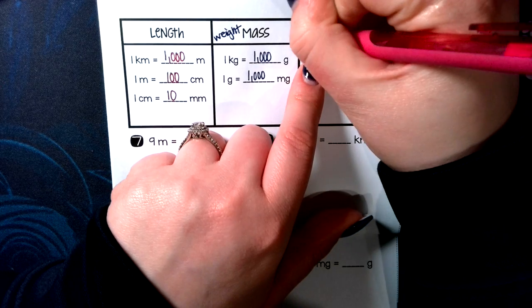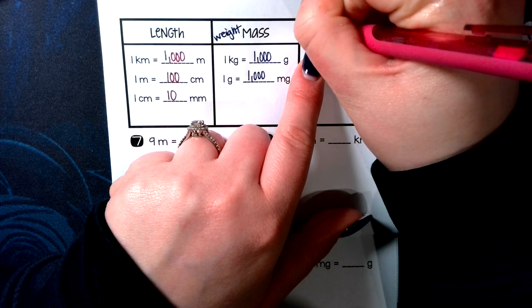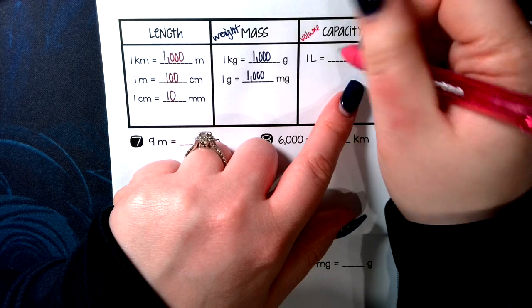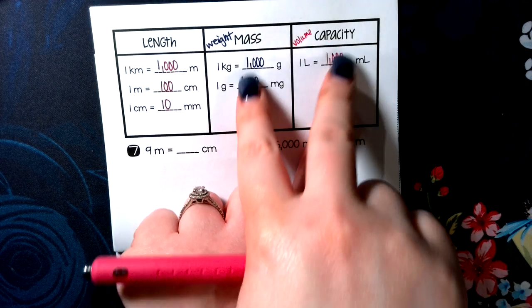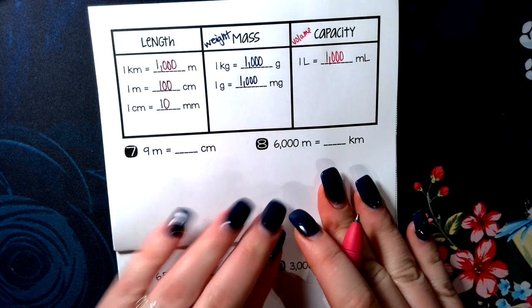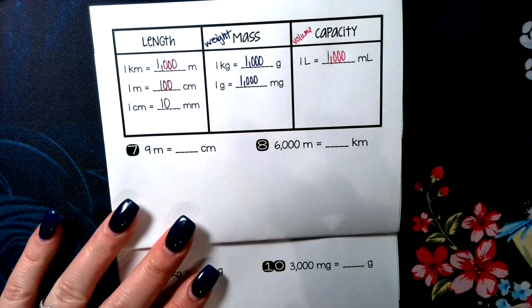And then capacity again is volume. One liter is 1,000 milliliters. Again, there are more for mass and capacity, but those are the basic ones that you're going to be seeing most often.